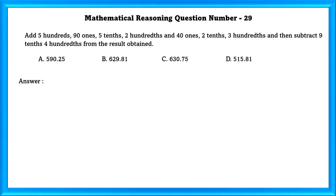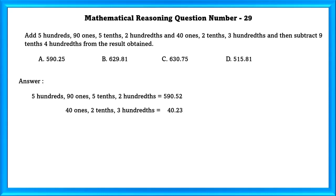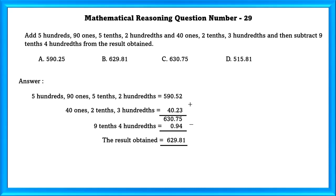Mathematical reasoning question number 29: Add 5 hundredths, 91 ones, 5 tenths, 2 hundredths, and 4 ones, then subtract 9 tenths and 4 hundredths from the result. 5 hundredths, 91 ones, 5 tenths, 2 hundredths equals 590.52. Similarly, 41 ones, 2 tenths, 3 hundredths equals 40.23. And 9 tenths, 4 hundredths equals 0.94. Adding and subtracting, we get 629.81.